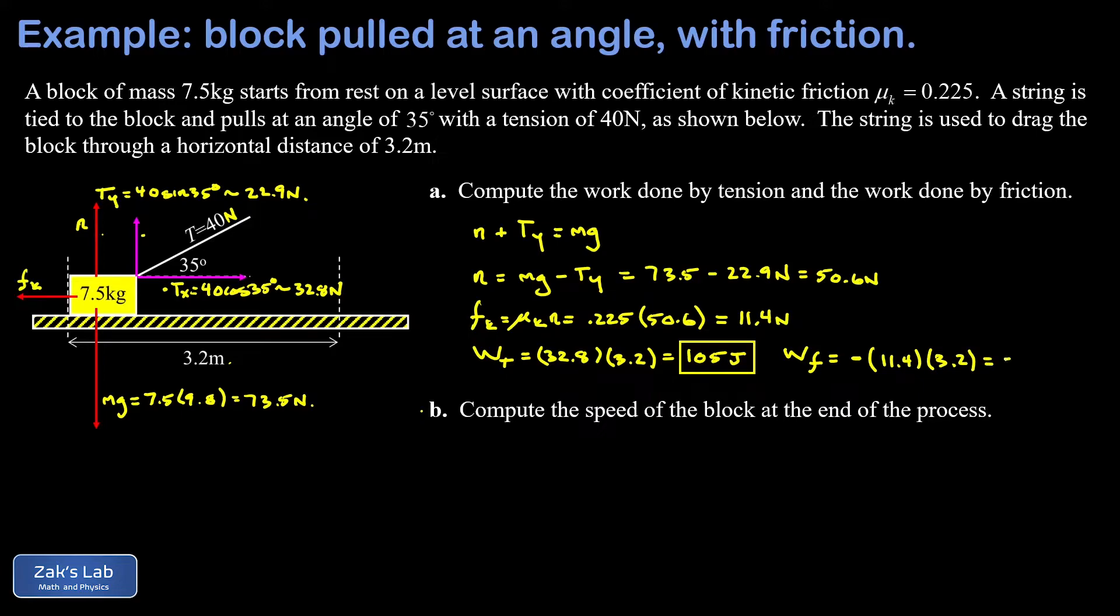I arrive at a work done by friction of negative 36.5 joules. This is the classic case of friction sucking energy out of a system - it's doing negative work, slowing things down compared to if it wasn't there.